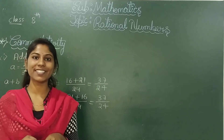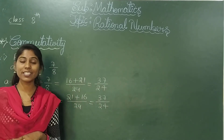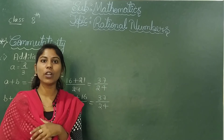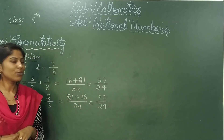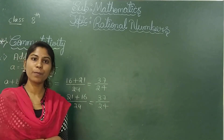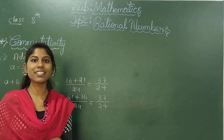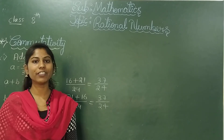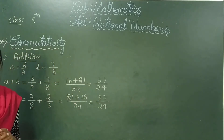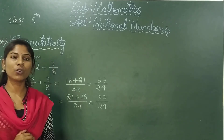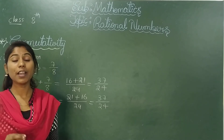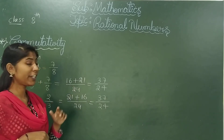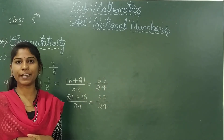Hi everyone, welcome to Wisdom Online Classes. In this rational number lesson, recall from a previous class the closure property and the definition of rational numbers. Rational numbers are in the form P/Q, where P and Q are integers and Q is not equal to zero. The closure property is satisfied for addition, subtraction, and multiplication, but not for division.